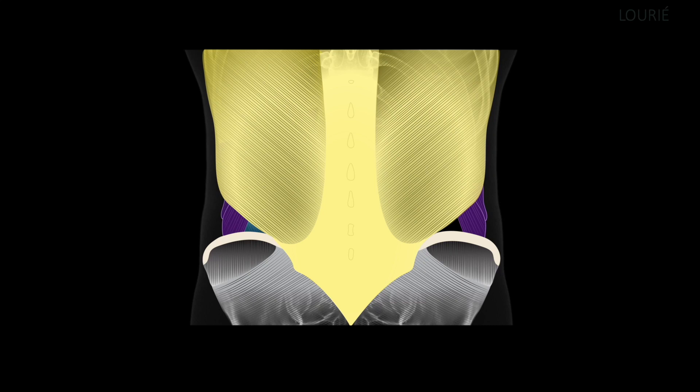A dorsal hernia through this inferior lumbar triangle was first described by Jean-Louis Petit, and this was published in 1783, more than 30 years after his death.